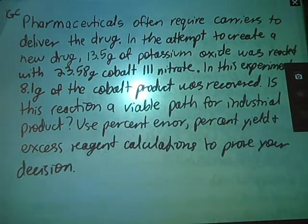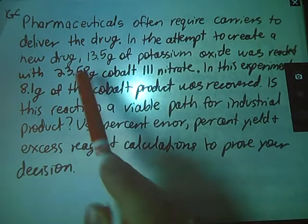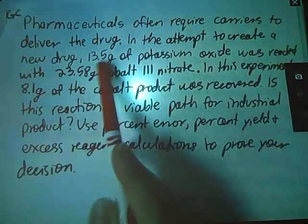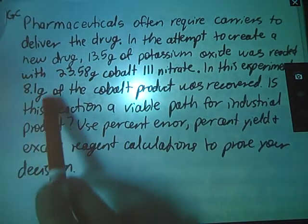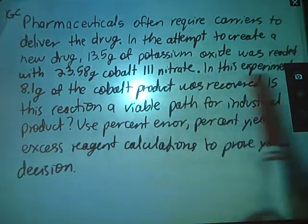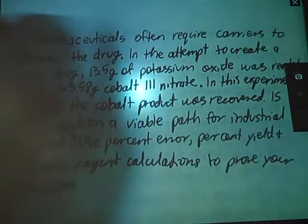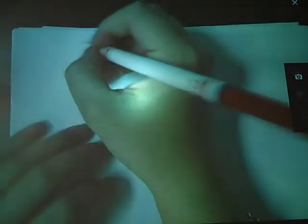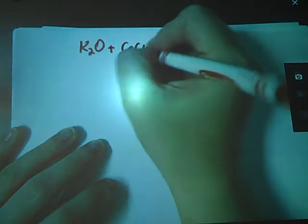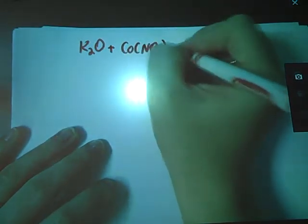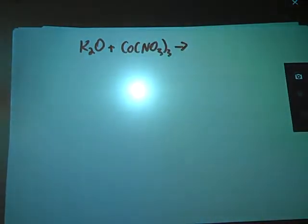So this means that I need to figure out how much solid products could be theoretically produced, and then see how well they did compared to this experimental value that they actually achieved. So this one I'm gonna work out by hand, the long way, or longer way. The problem said that we were mixing potassium oxide and cobalt nitrate. So mixing these two things together.